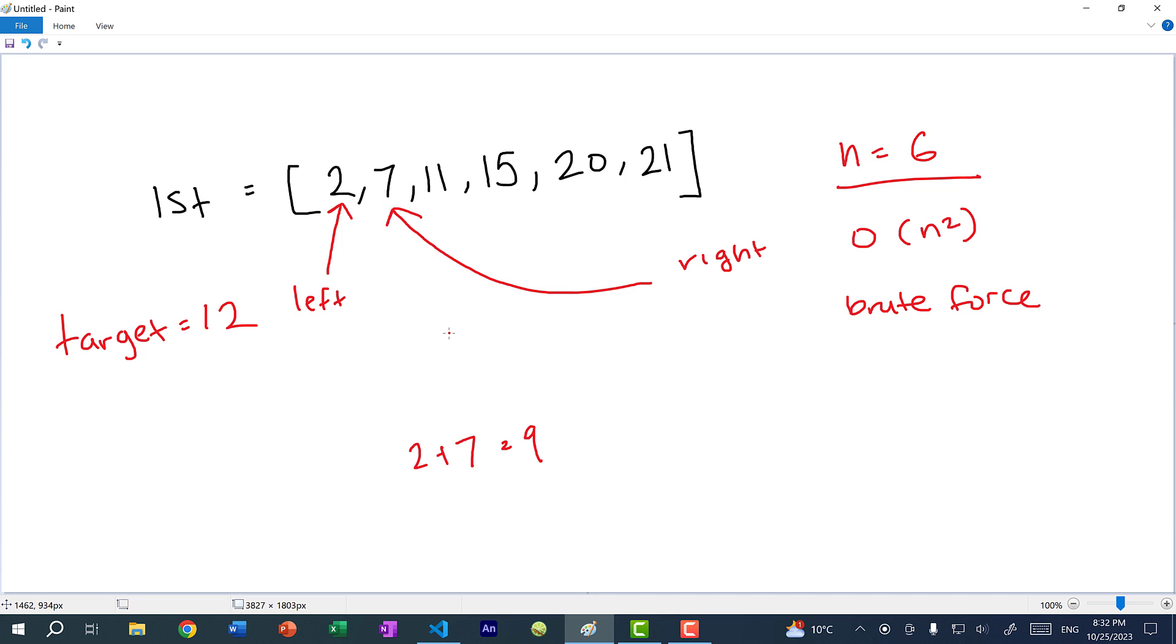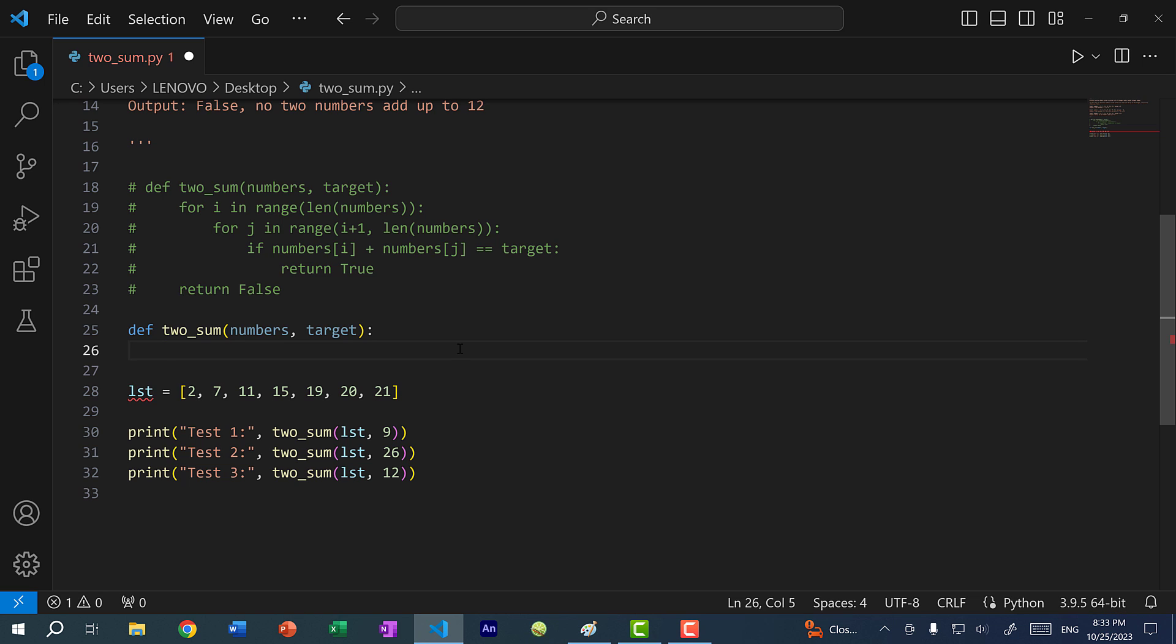So what do we do? We move left up one. At this point we can see that left and right, these two pointers are crossing path. That means at this point, if we do not find two numbers that equal to the target, there are no two numbers that will equal to the target. So I'm going to create two variables to keep track of the left side and the right side.